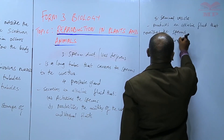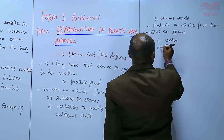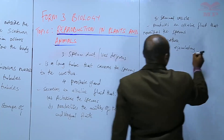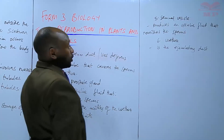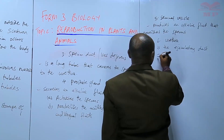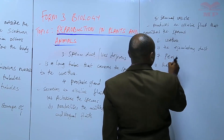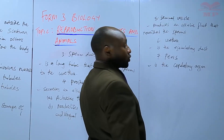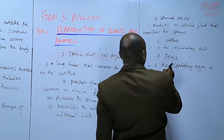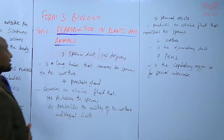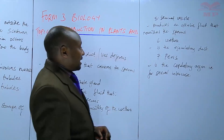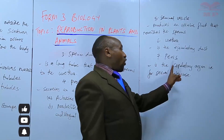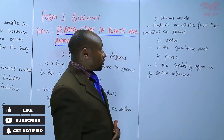Then we have the urethra, which serves as the ejaculatory duct where semen passes during ejaculation. Finally, we have the penis, which is the copulatory organ — the organ that allows copulation or sexual intercourse to take place. Those are the parts of the male reproductive system along with their functions, from the testes all the way to the penis.